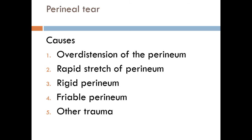Perineal tear — what are the causes of perineal tear? Perineal tear can occur either due to obstetric causes or non-obstetric causes. According to the obstetric causes, it may be due to over-distention of the perineum, rapid stretch of the perineum, rigid perineum, and friable perineum.